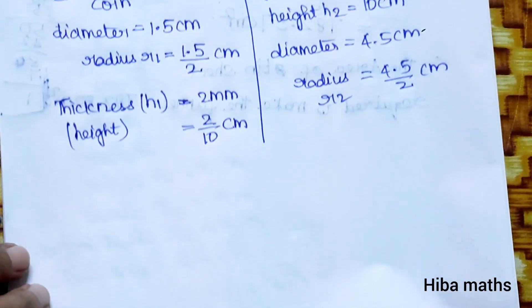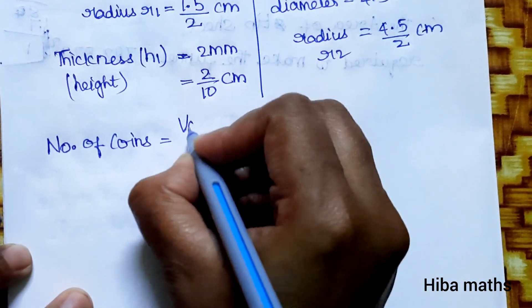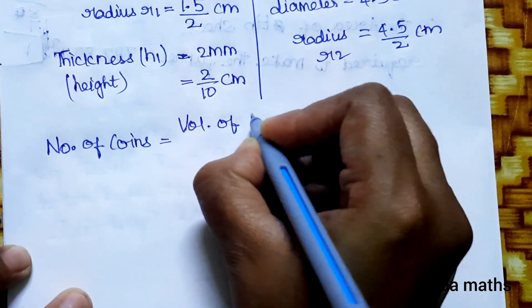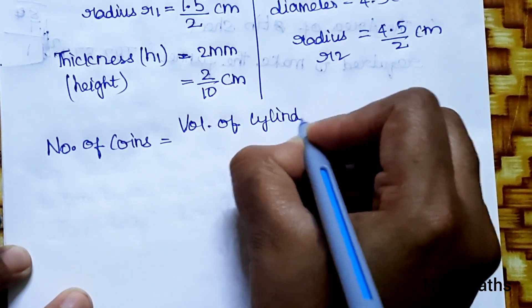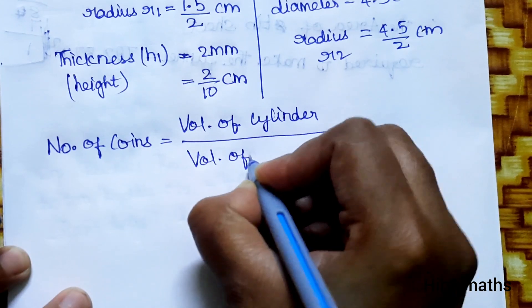Now for volume. Number of coins is equal to volume of cylinder divided by volume of one coin.